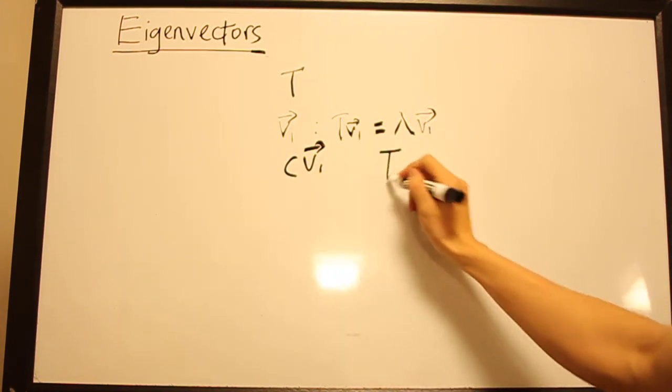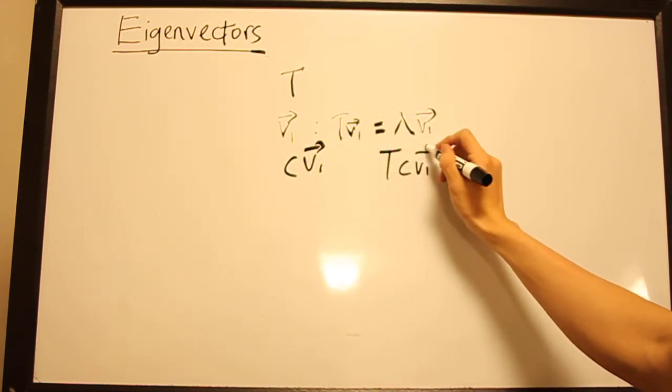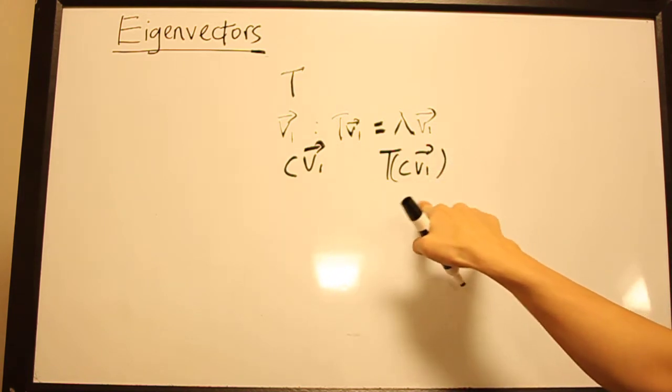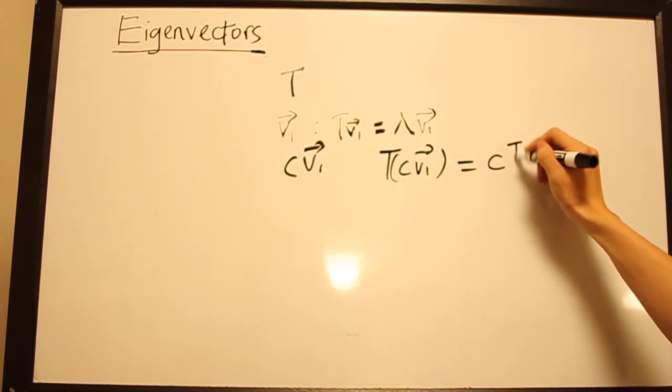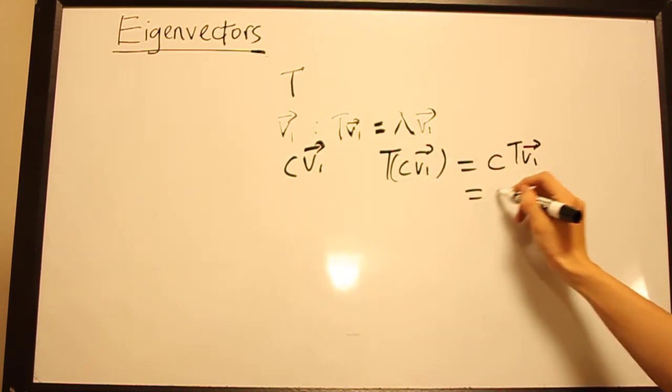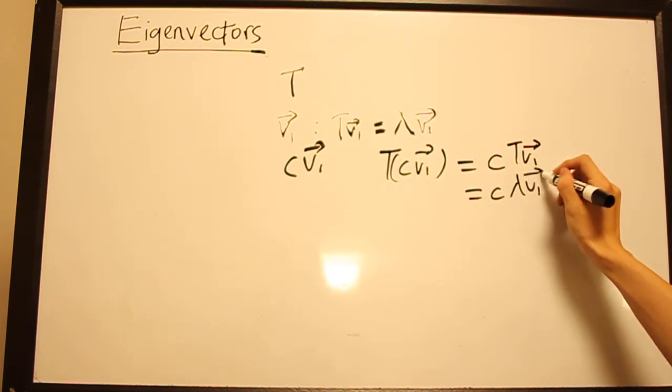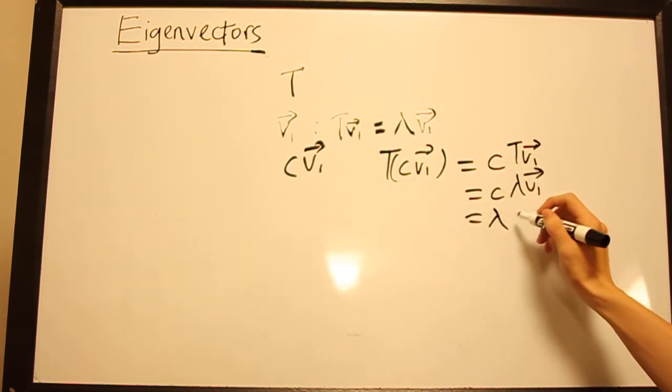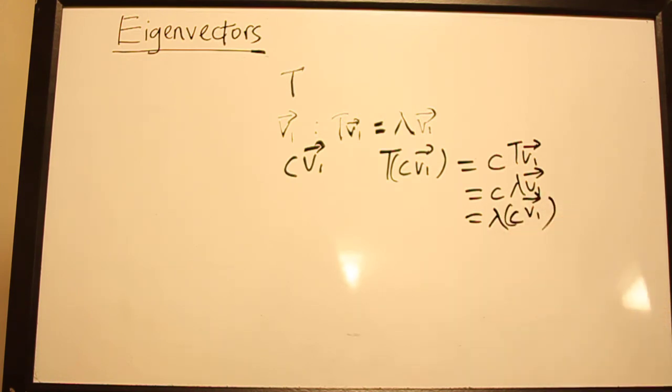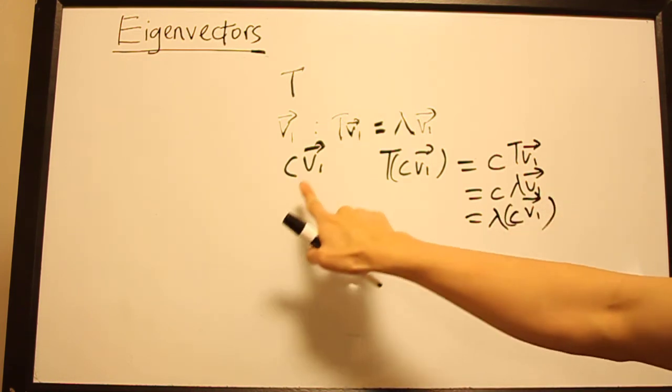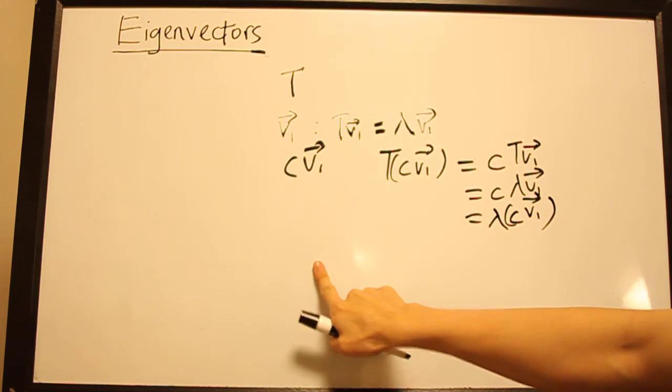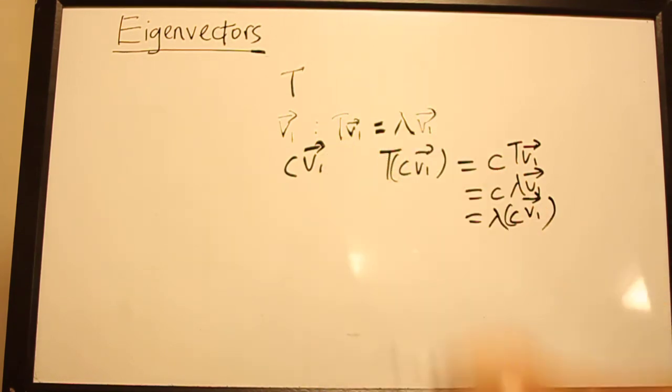So it should be clear that any constant times V₁ is still going to be an eigenvector of T with the same eigenvalue. So if we write that out, because this is a linear transformation we have C·T(V₁) equals C·λV₁ equals, swapping the scalars, λ·CV₁. So any constant times an eigenvector of T is going to give me another eigenvector of T with the same eigenvalue.